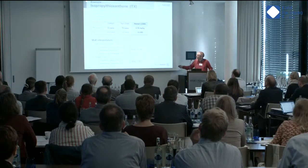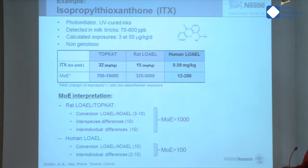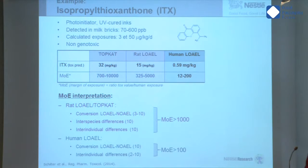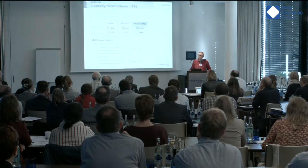Focusing on the rat LOAEL: you get the predicted value for ITX of about 50 milligrams per kilogram body weight per day — a chronic one. If you calculate the margin of exposure by dividing the chronic LOAEL by the exposure, and convert the LOAEL to a no-effect level with a factor of 10, then add the classical inter-species and inter-individual factors, you should have a margin higher than 1,000. We could see that at the highest exposure we were lower than that, which actually triggered action.